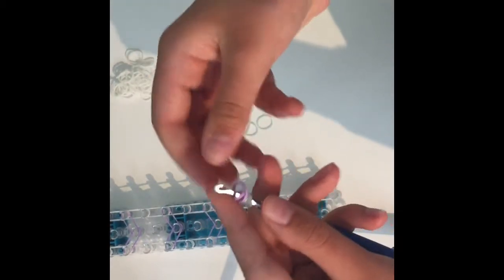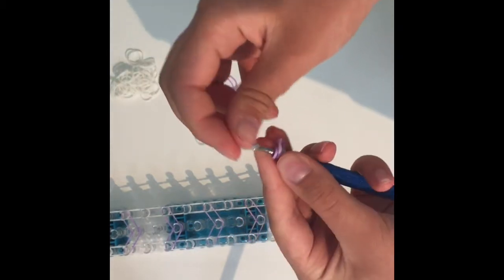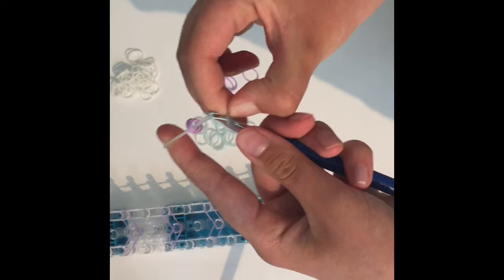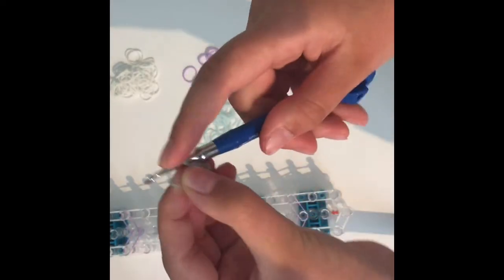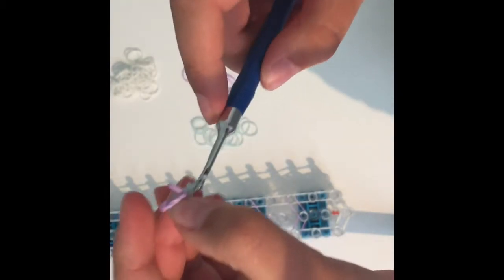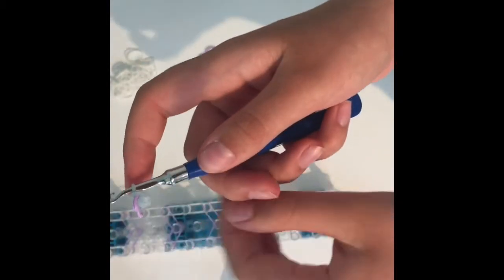Take your center color again and pull all those bands up and over your band there. Then you're going to make a slip knot, a very loose one, like so.